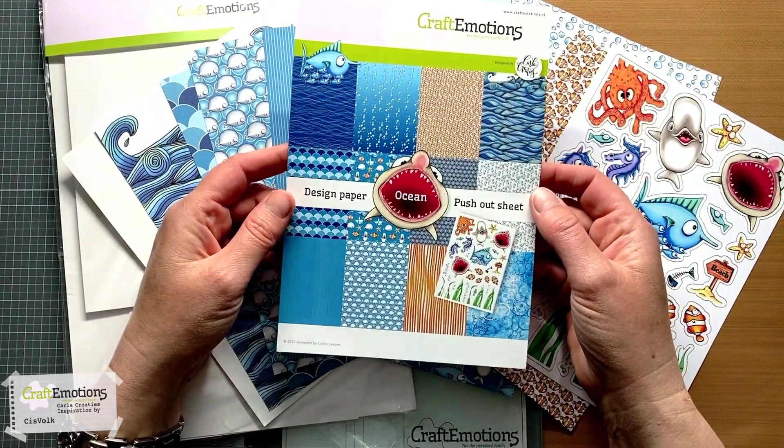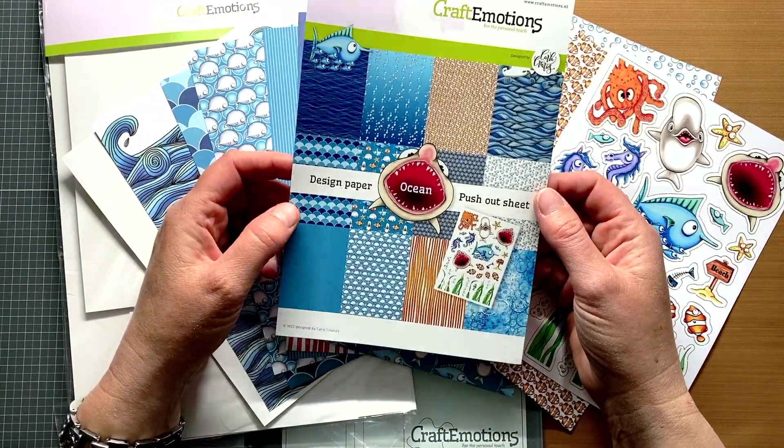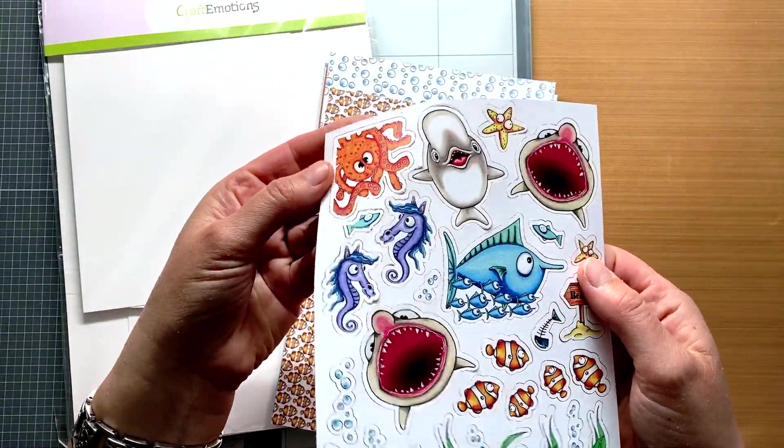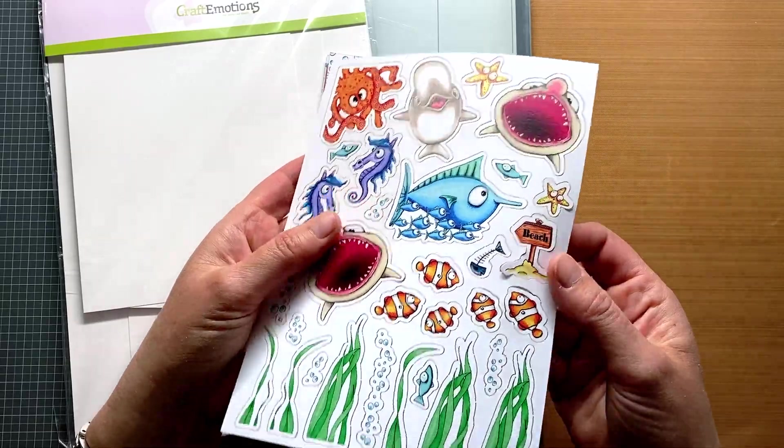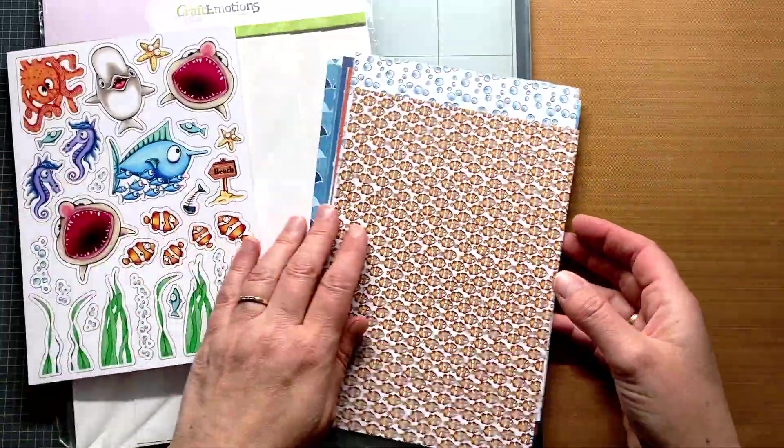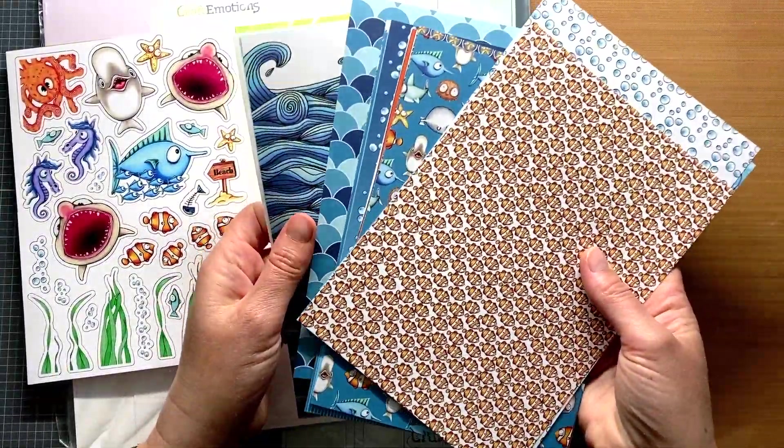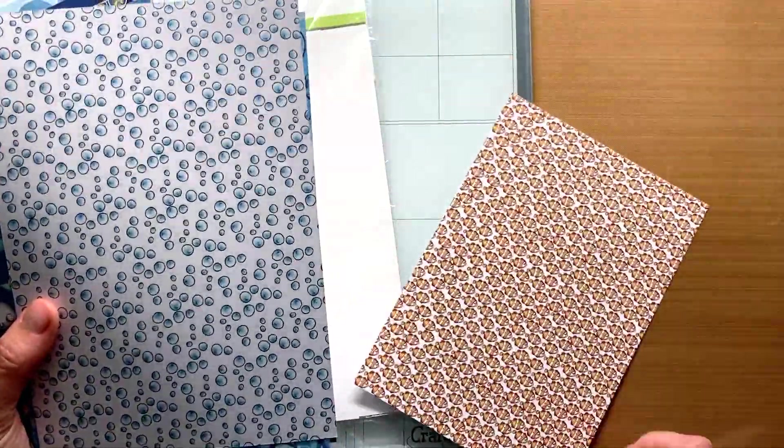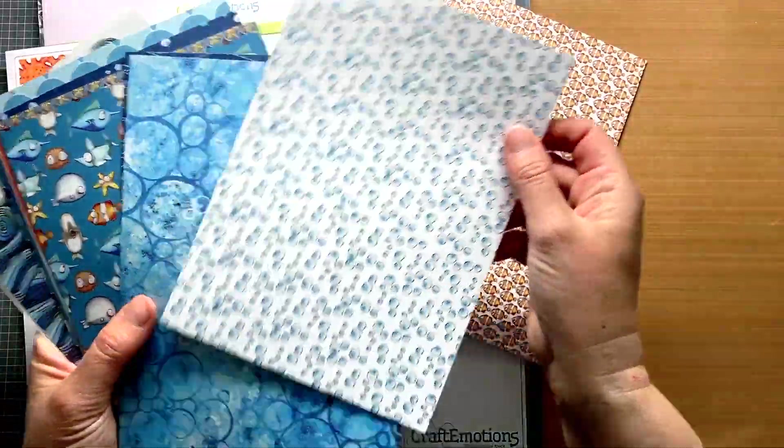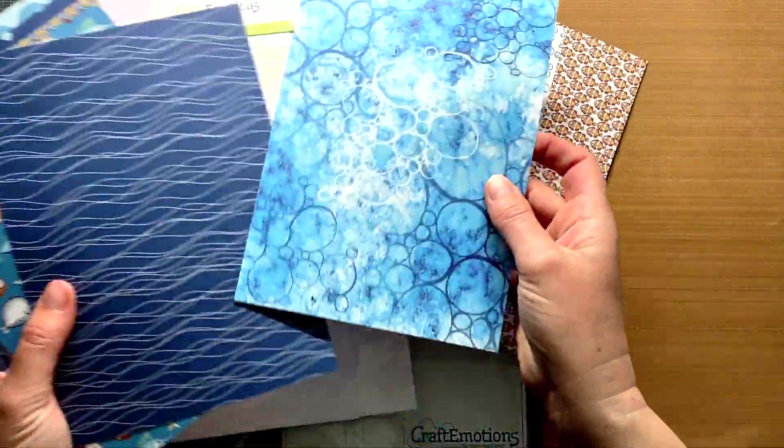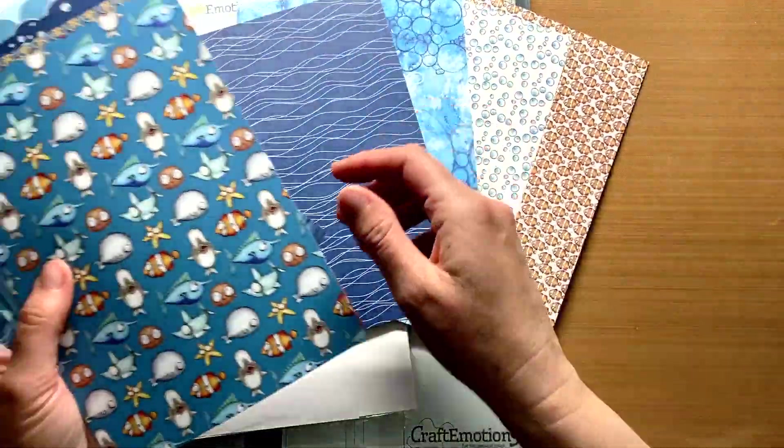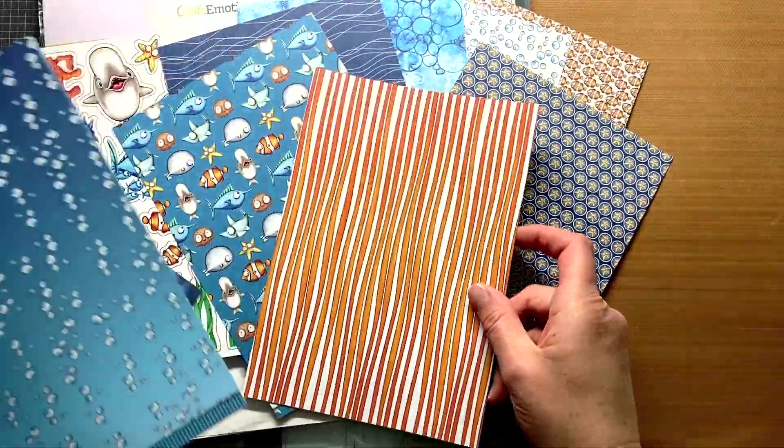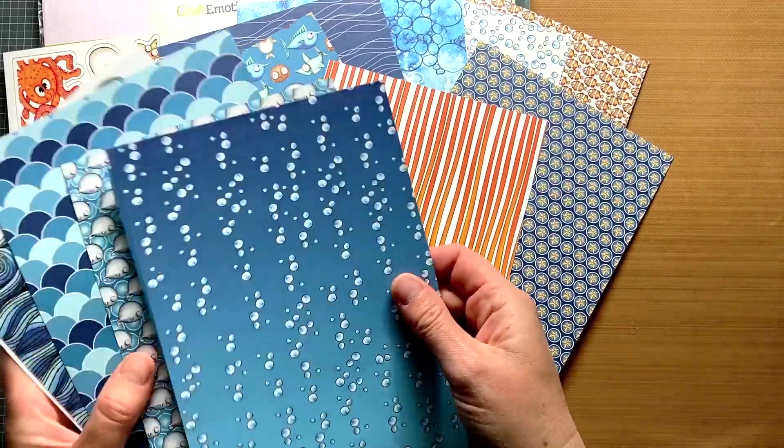Here I have the paper that I am going to use to make a never-ending card. The paper set consists of one push-out sheet with all kinds of funny figures. The figures are pre-punched, so easy to remove. It also contains 12 sheets of double-sided printed paper with 6 different patterns in A5 size. I show them quickly. I link in the upper right corner to another video where I show the sheets in more detail.